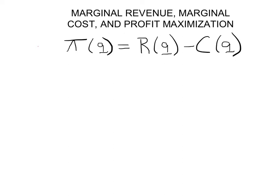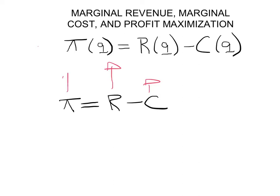A critical term here is how much the next unit will change profit. So when you produce one more unit, how do profits change? Let's write the equation without the output terms so we can give an intuitive explanation. If the next unit increases revenue by that much and increases cost by that much, well, if the next unit increases revenue by more than cost, clearly your profits go up.